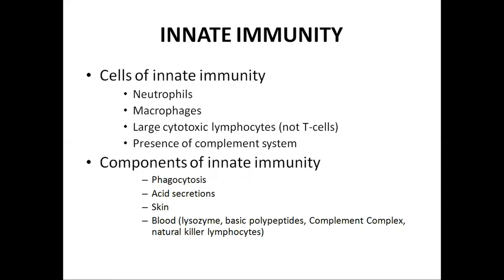Innate immunity. The cells involved in innate immunity are neutrophils, macrophages, cytotoxic T cells, and the presence of the complement system. The mechanisms involved include phagocytosis — neutrophils and macrophages have the ability to phagocytose foreign invaders. It also involves the secretion of digestive enzymes and HCl, tissue histiocytes, and certain substances in the blood such as lysozymes and basic polypeptides.